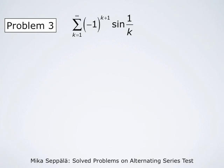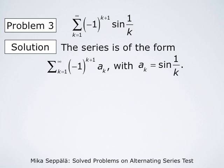Consider the series summation k from 1 to infinity of negative 1 to the power k plus 1 times sine of 1 over k. Our task is to figure out whether this converges or not. This is an alternating series with ak being sine of 1 over k. We have to figure out whether these numbers ak satisfy the conditions of the alternating series test — specifically, that the ak form a decreasing sequence with limit 0.